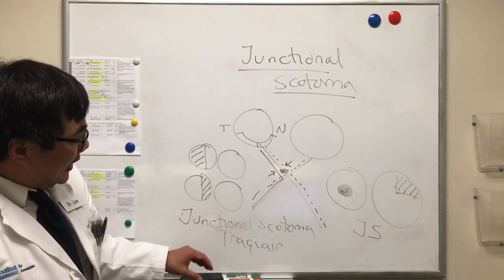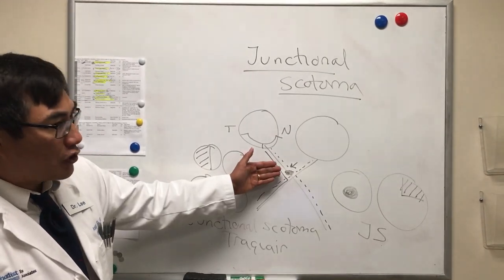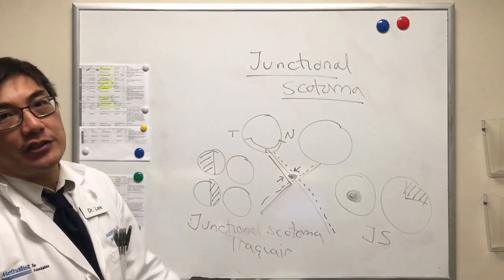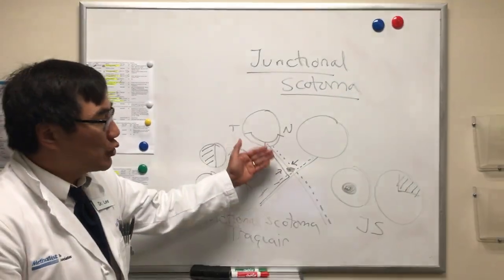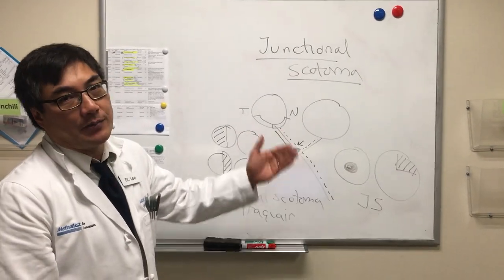The reason this is important is both the junctional scotoma and the junctional scotoma of Traquair are almost always mass lesions at the junction of the optic nerve and chiasm, of which pituitary adenoma, meningioma, craniopharyngioma, and aneurysm are the top causes.